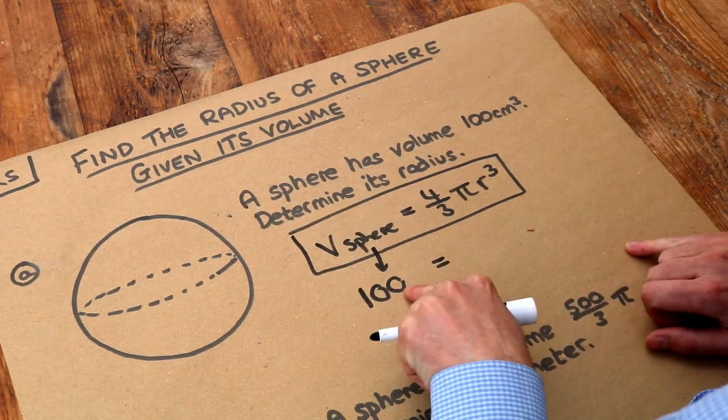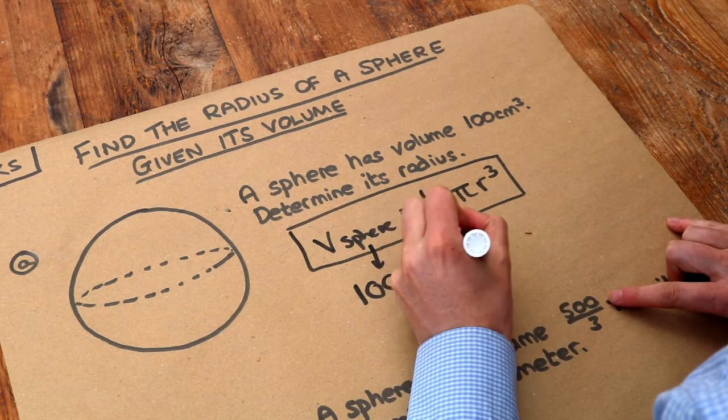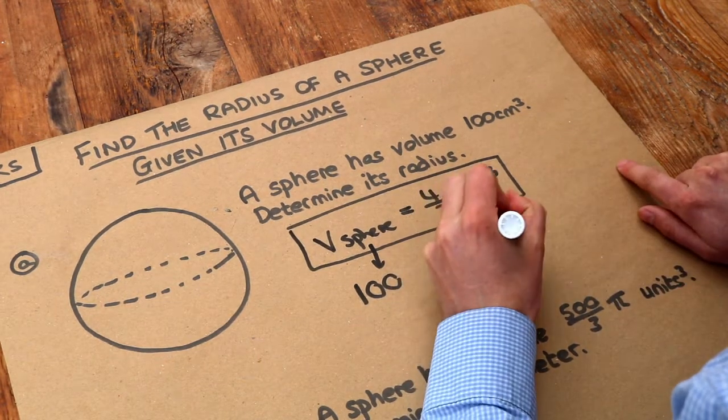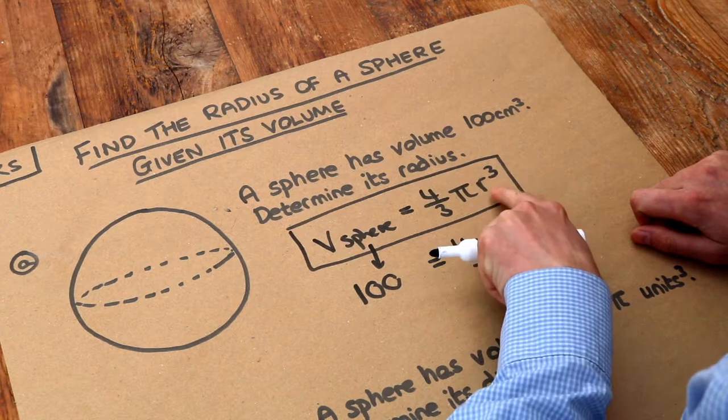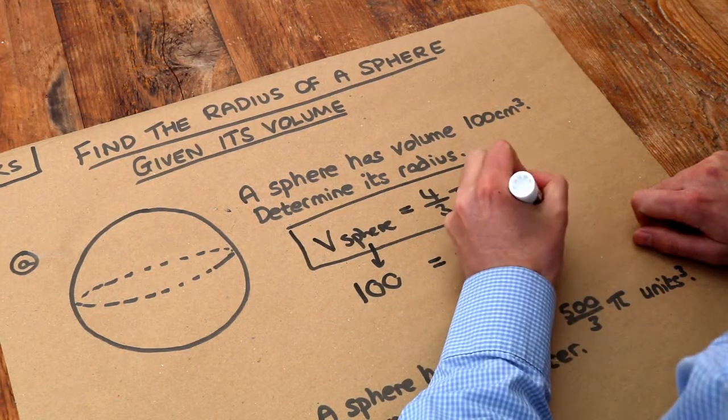I tend not to put the units in when I substitute. And then we've got four thirds times by pi, and that just means times by the radius cubed. We don't know what the radius is, so let's just make it r.